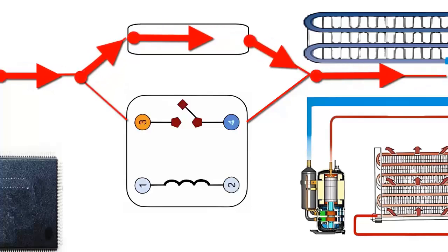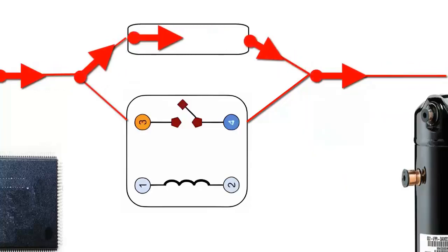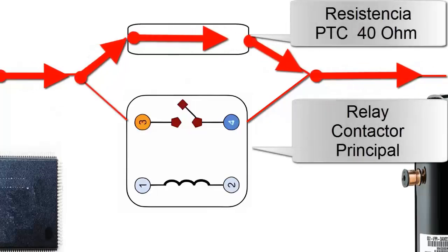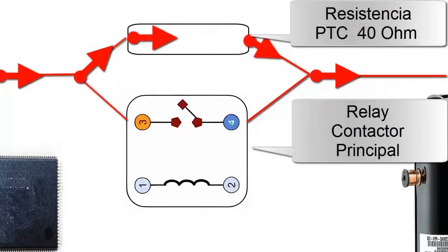To ensure that the current does not reach damaging levels for both the electronic board and the compressor, the unit uses a protection circuit that initially operates with control through a PDC resistor.